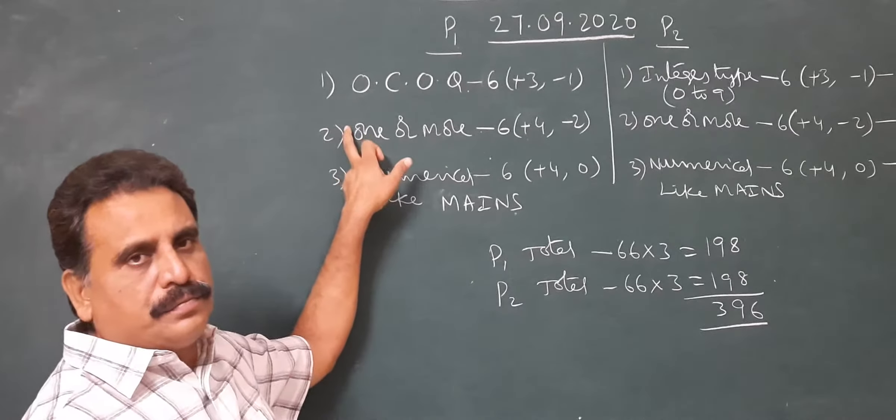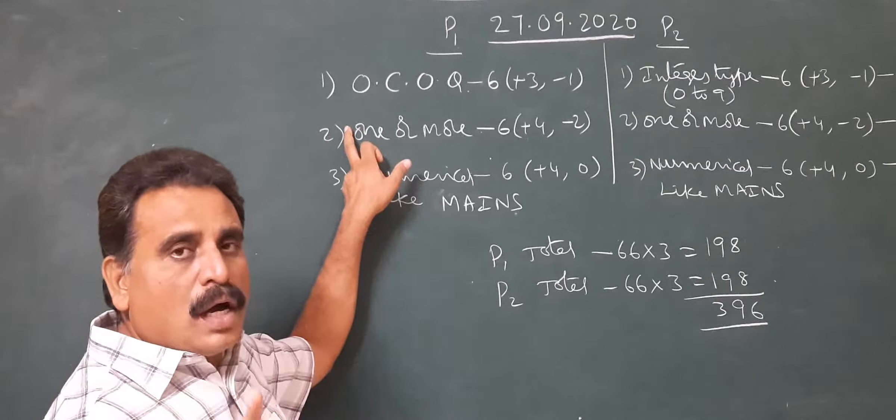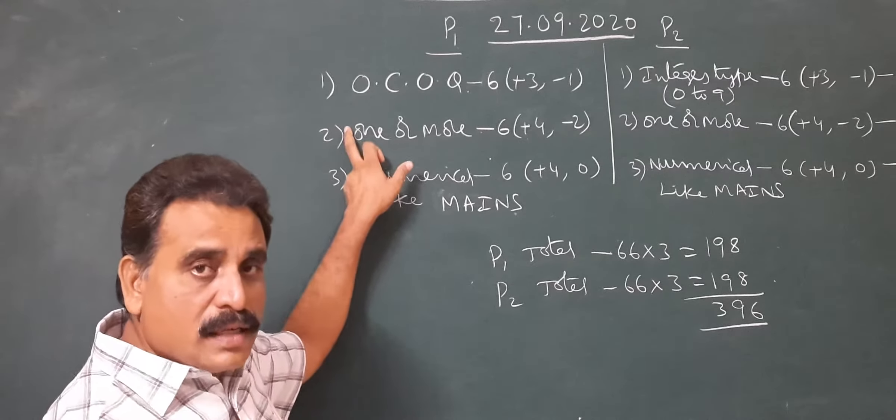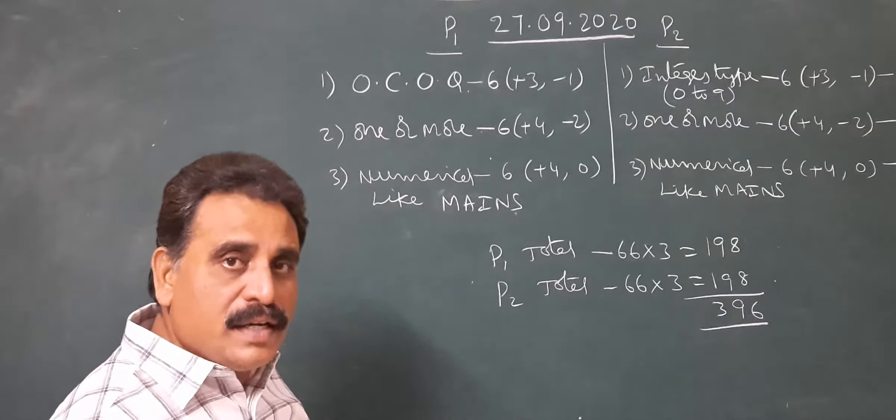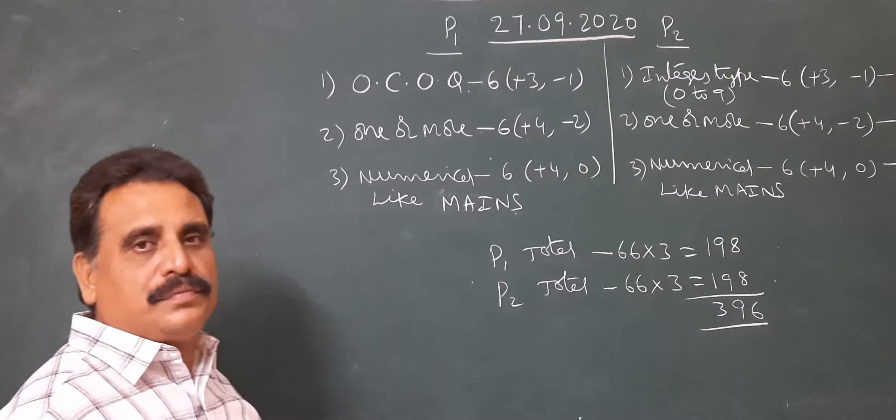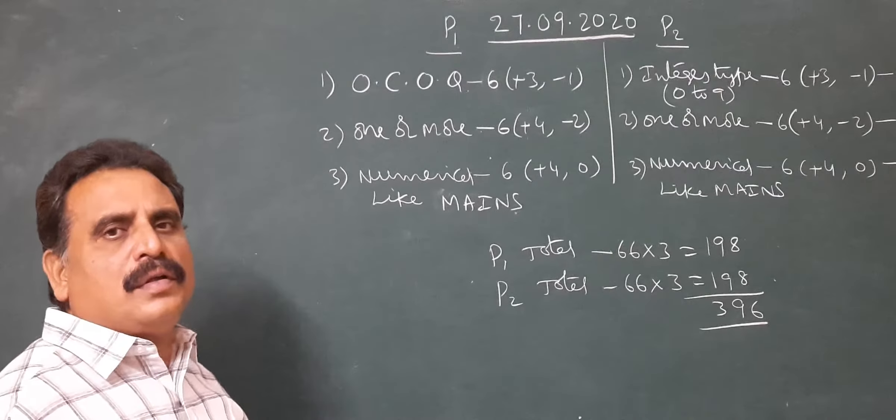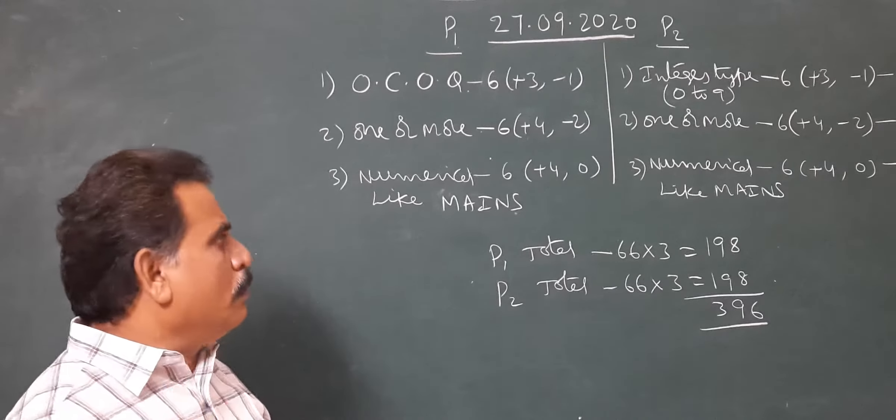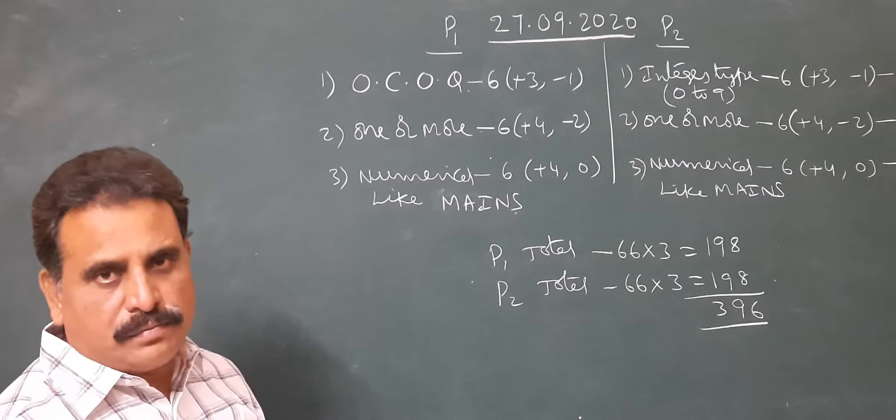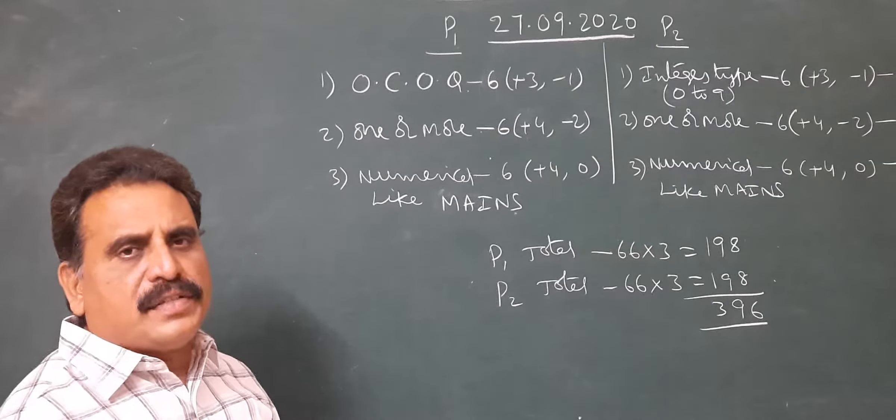Second section: one or more options. Partial marking is there. That section contains six questions. Plus 4, minus 2. Partial marking is there. For example.